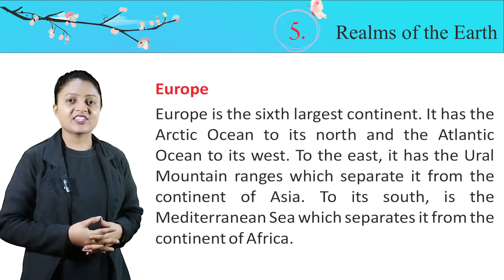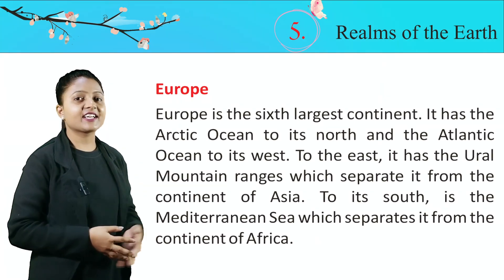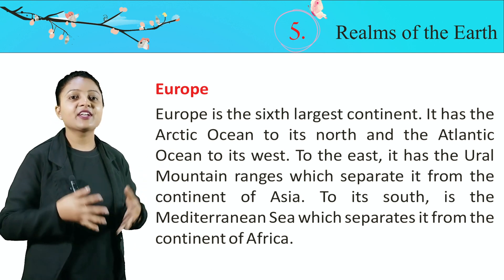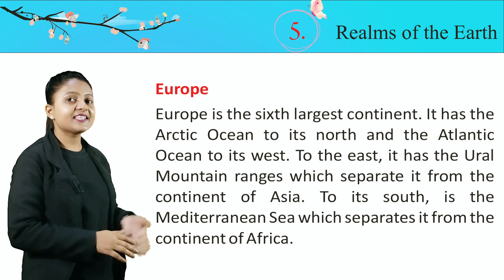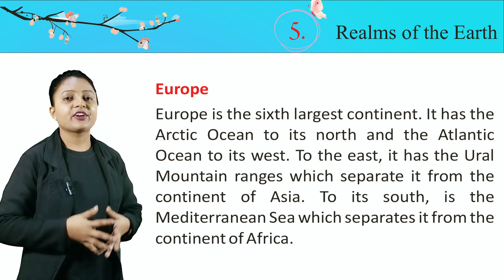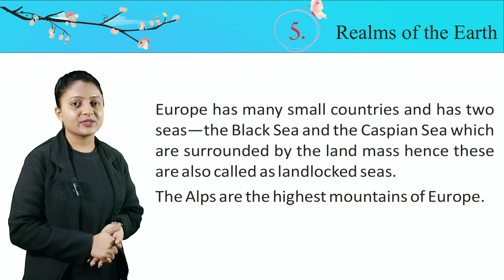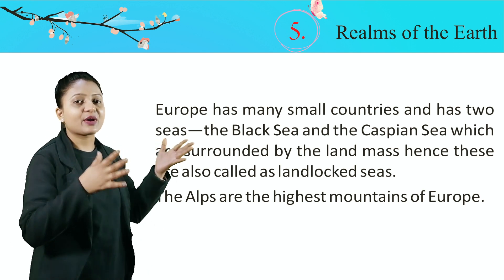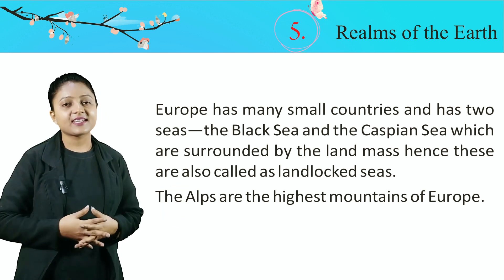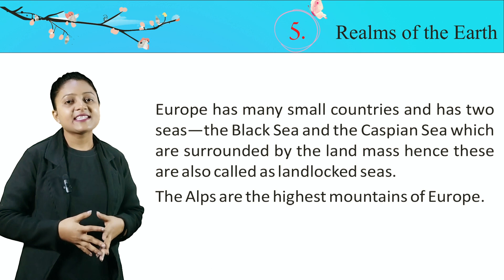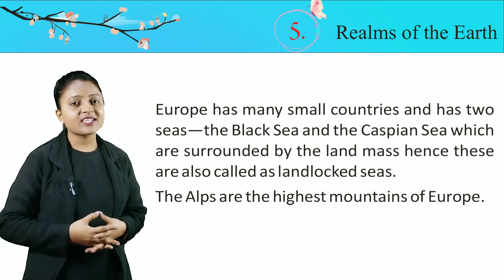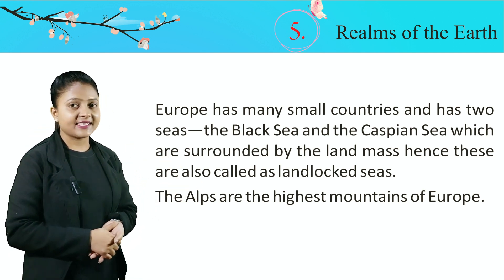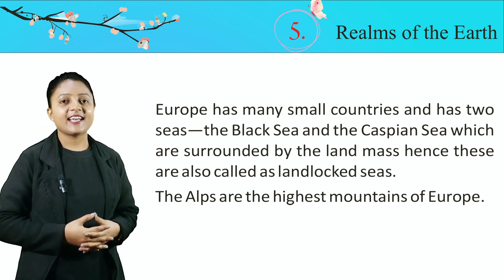Europe is the sixth largest continent. It has the Arctic Ocean to its north and the Atlantic Ocean to its west. To the east, it has the Ural Mountains which separate it from the continent of Asia. To its south is the Mediterranean Sea, which separates it from the continent of Africa. Europe has many small countries and has two seas — the Black Sea and the Caspian Sea — which are surrounded by land mass, hence these are also called landlocked areas. The Alps are the highest mountains of Europe. Europe sixth largest continent hai aur yahan par bahut saari choti choti countries hain. Caspian Sea aur Black Sea bhi iske andar hain. Ural Mountains isko Asia se alag karte hain.